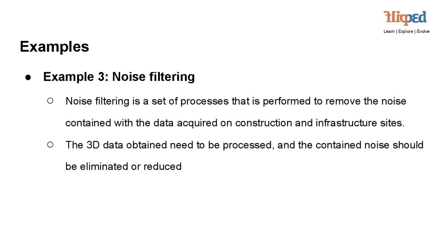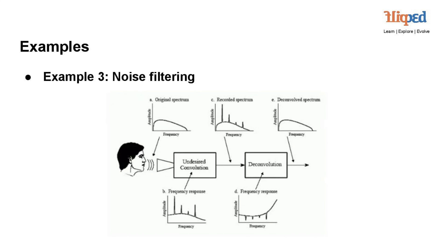When 3D data is obtained from various sensors or measurement devices, it may contain unwanted noise that can distort or interfere with the accurate representation of the site. To obtain reliable and precise data, noise filtering is applied to the 3D data. The filtering techniques aim to eliminate or reduce the noise while preserving the essential information. By effectively removing noise from the data, the quality and accuracy of the results can be improved, making it easier to analyze and interpret the acquired information for construction and infrastructure projects. The image illustrates the concept of noise filtering through signal processing, showcasing the transformation from an original spectrum to a deconvolved spectrum, resulting in noise reduction and a cleaner signal.